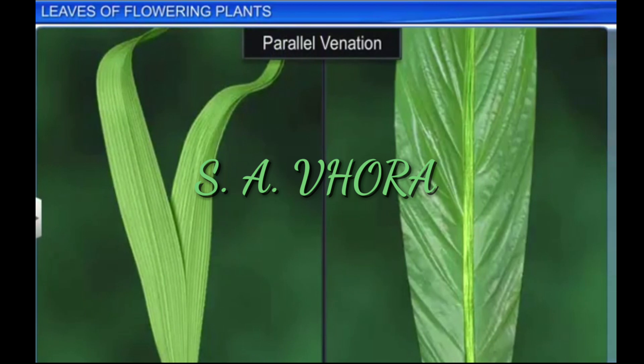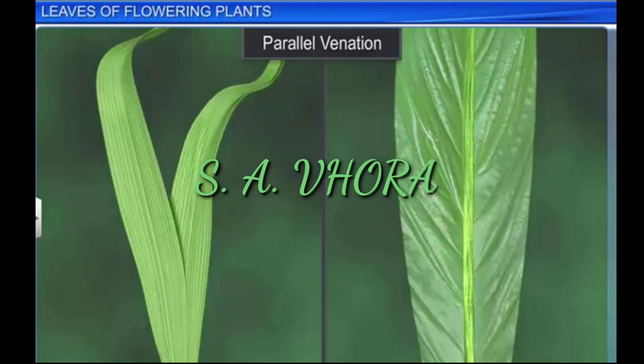When veins are arranged parallel to one another all over the leaf blade or lamina, it is called parallel venation. Examples include grains, banana, canna, etc.